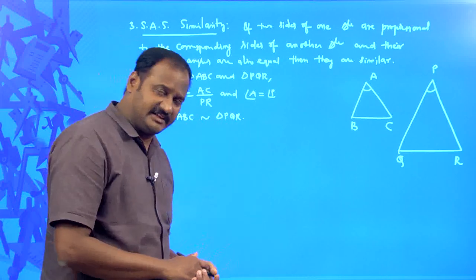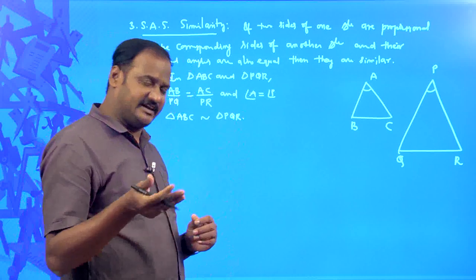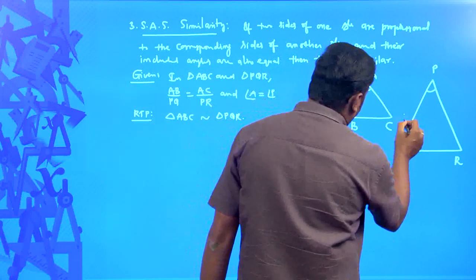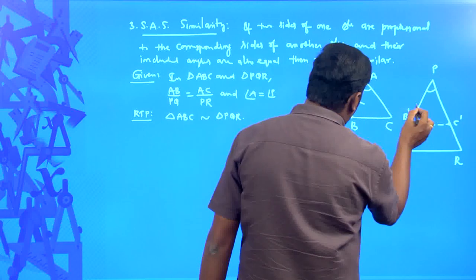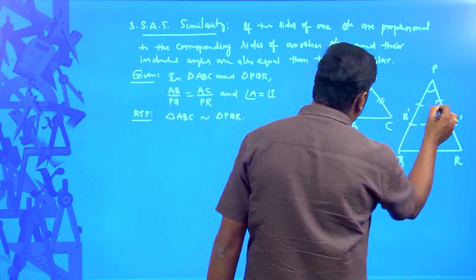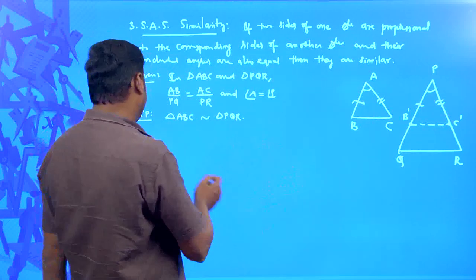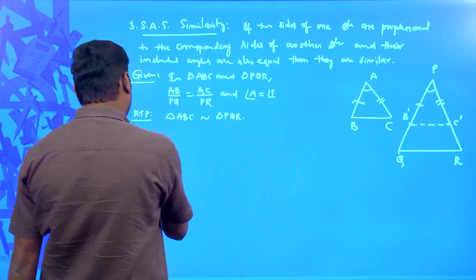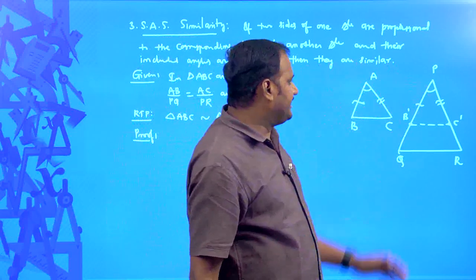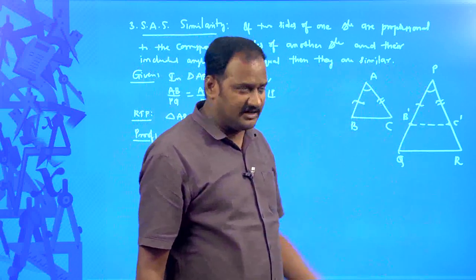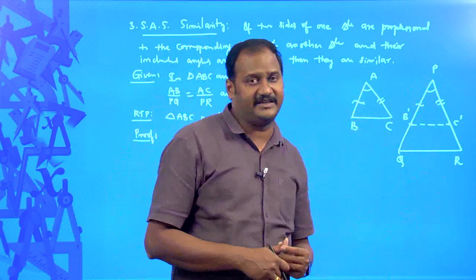We can either prove their corresponding angles are equal or their corresponding sides are proportional. For the construction, we take a point B' and one more point C' on the second triangle such that AB = PB' and AC = PC'. In order to prove this statement, observe: AB = PB' by construction, angle A = angle P is given, and AC = PC' by construction. So triangle ABC and triangle PB'C' are congruent by SAS congruence.